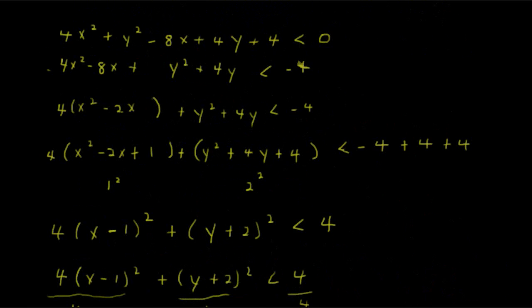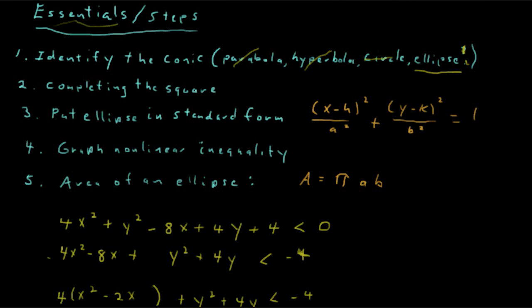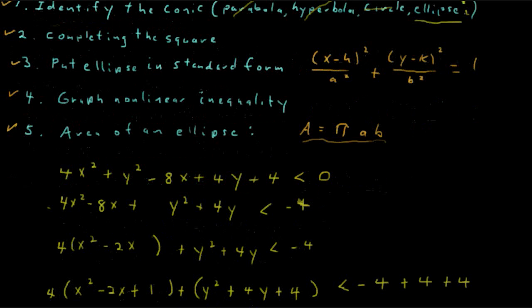Let's just recap and make sure that we've completed everything we said we were going to. We identified the conic. We determined that it was an ellipse. And since it was an ellipse, we had to do completing the square to put that ellipse in standard form. We graphed the nonlinear inequality. And we determined that it was an ellipse. And then we found out what the area of that ellipse was using the formula A = π × a × b.